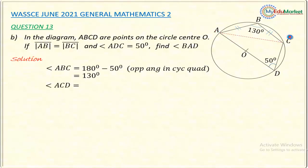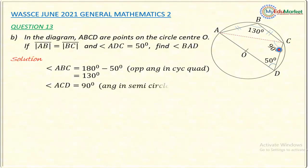Now let me find angle ACD. Notice that OD is a diameter, so this part of the circle is a semicircle. The theorem states that an angle in a semicircle is 90 degrees — angles subtended by a diameter at the remaining part of the circle equal 90 degrees. Therefore, angle ACD = 90 degrees.